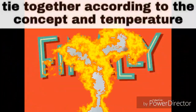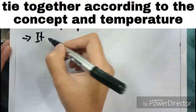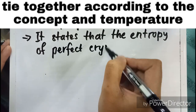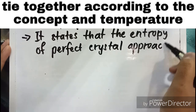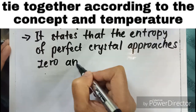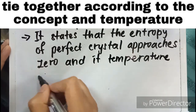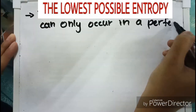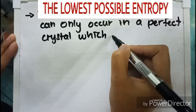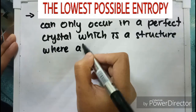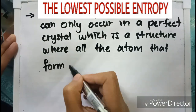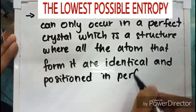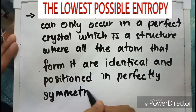According to the concept, as temperature decreases, the particles come together, and it states that the entropy of a perfect crystal approaches zero at absolute zero temperature. The lowest possible entropy can only occur in a perfect crystal, which is a structure where all the atoms that form it are identical and positioned in a perfectly symmetrical way.